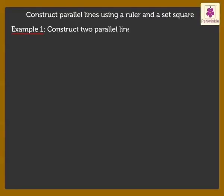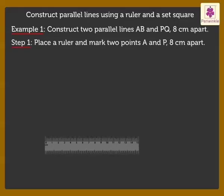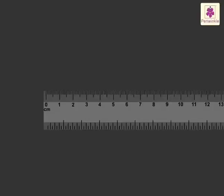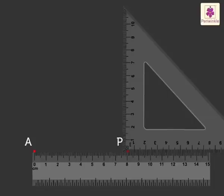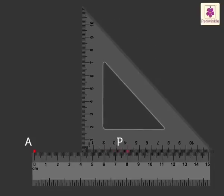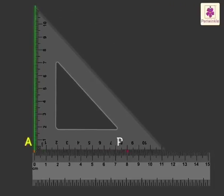Construct two Parallel Lines AB and PQ 8 cm apart. Step 1: Place a Ruler and mark two points A and P 8 cm apart. Step 2: Slide the Set Square along the Ruler till its vertical edge is on A. Plot point B along the vertical edge of the Set Square.